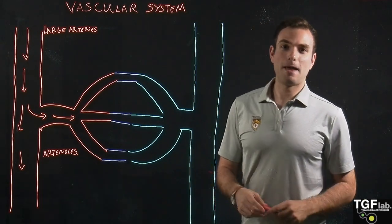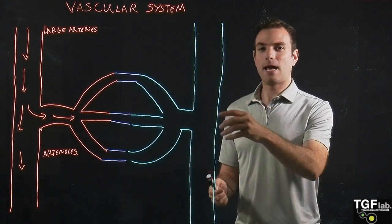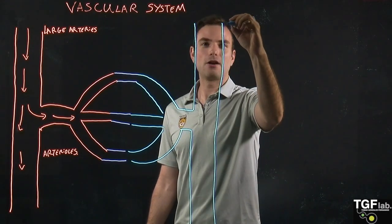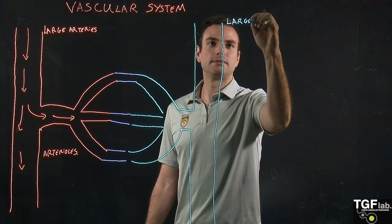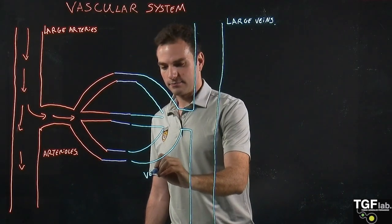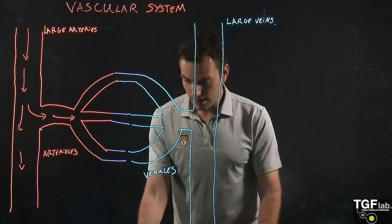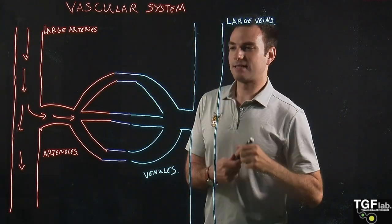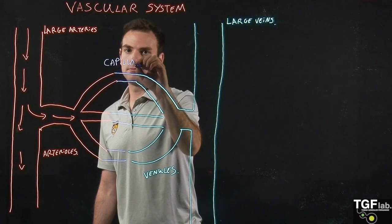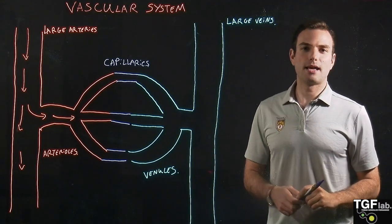We also have the venous branch. In the venous branch we have the different vessels that are going to carry the deoxygenated blood back to the heart and into the lungs. We have the large veins — for example the vena cava — and the smaller veins, the venules. Very importantly, connecting the arteries and veins we have the capillaries, where gas exchange and nutrient exchange between the blood and the tissues takes place.